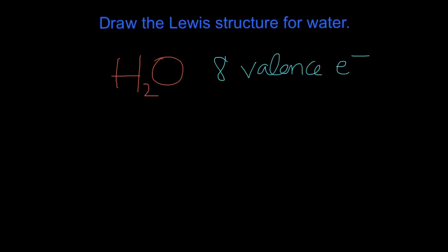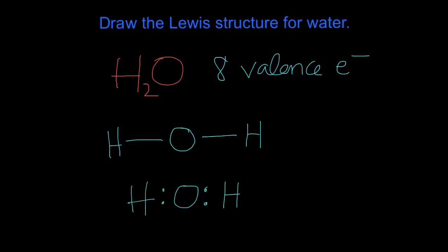We start by putting the least electronegative atom in the center. There's a caveat though — hydrogen is never in the center typically. So even though oxygen is more electronegative than hydrogen, it still goes in the center. We put oxygen in the center, then draw single bonds connecting it to the other atoms. So far we've only put in four electrons into this water molecule, so we still need to add four more electrons.